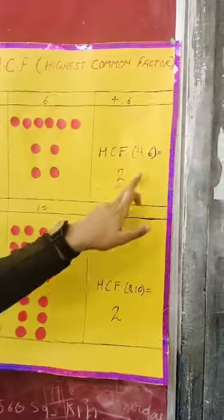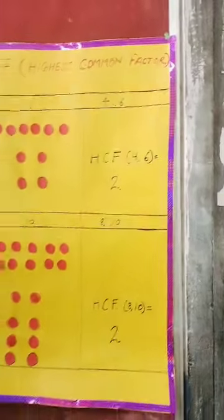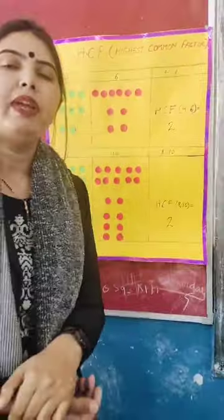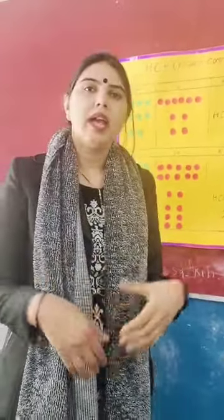HCF for 4 and 6 is 2. By using this method we can find HCF for any 2 numbers.